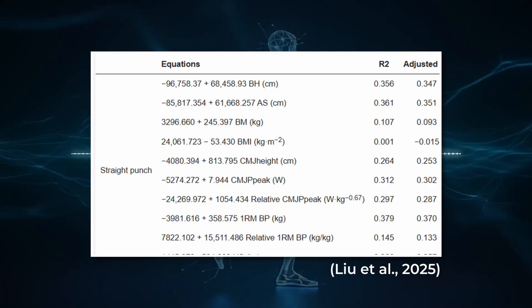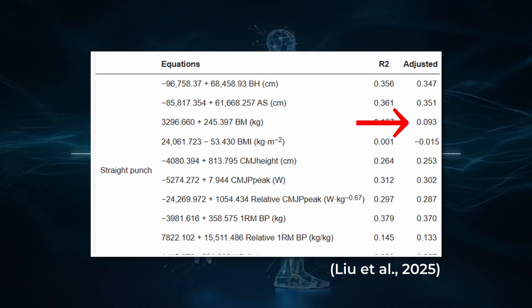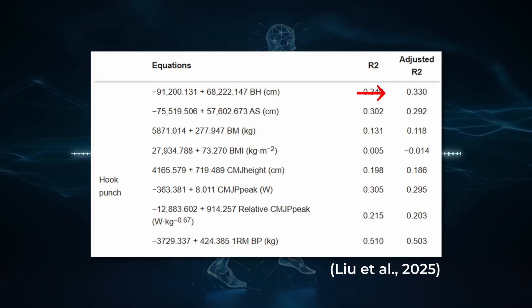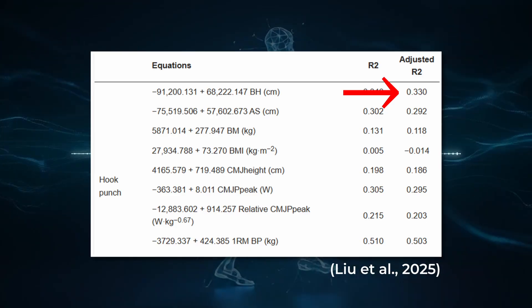Now here's the kicker. Body mass, what determined your weight class, explained only 10% of straight punch power and 11% of hook punch power. Height predicts punch power 3 times better than body weight.